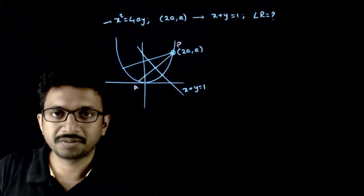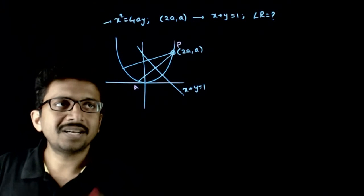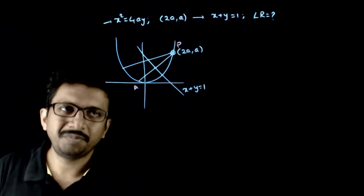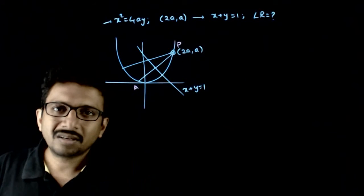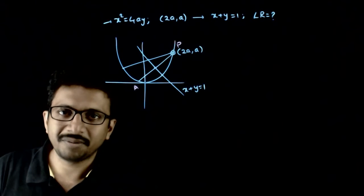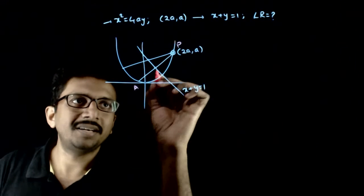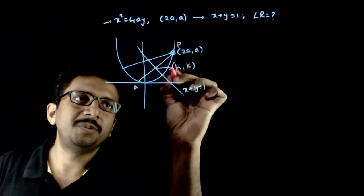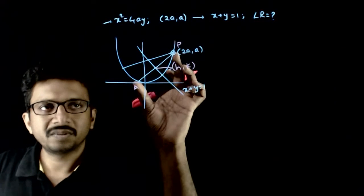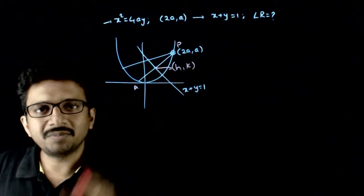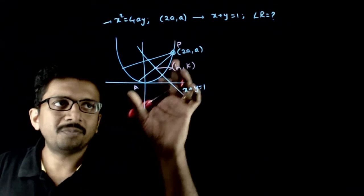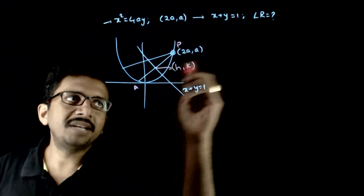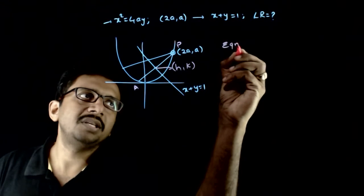How do we solve this? First, let us assume that PA is a chord passing through (2a, a), and let (h, k) be the midpoint of that chord. So if (h, k) is the midpoint of chord PA, I can find the equation of PA.